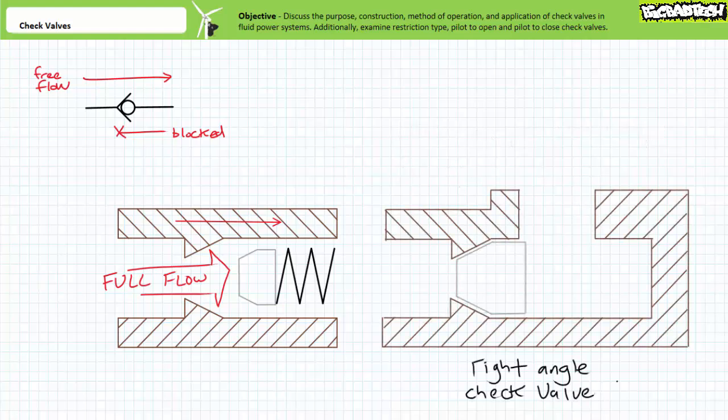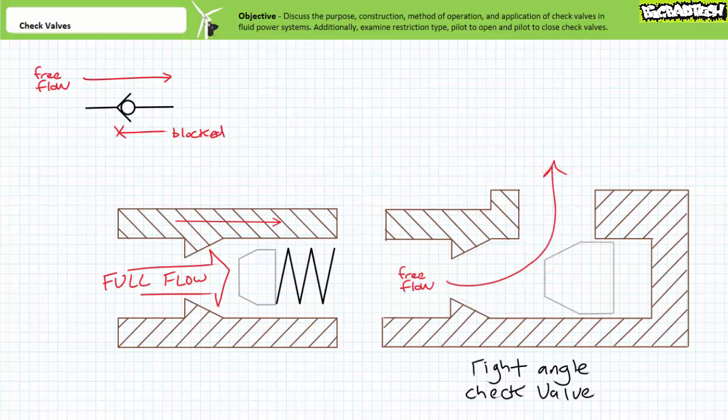For this reason, consider an alternate arrangement of a basic check valve called a right angle check valve. In this case, fluid flow is still blocked from out to in. However, when flow is routed into out, the poppet is forced out of the path. Free flowing fluid still has to make a hard 90 degree turn, but it sure beats zigzagging around an obstruction directly in the path.